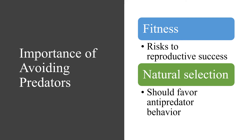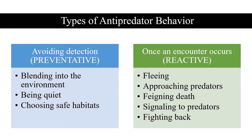However, as we have seen, other important factors might be at play, like energy costs to the individual or personality influences, that might cause the selection of these behaviors to not be so straightforward. Some of these factors may have influenced the development of various anti-predator behaviors. The two main kinds of anti-predator behaviors are avoiding detection by predators, which is a preventative measure, and the behaviors the animal executes once an encounter occurs, which is a reactive measure. While this is not an exhaustive list and does not account for non-living predators, it does cover a large portion of common anti-predator behaviors.